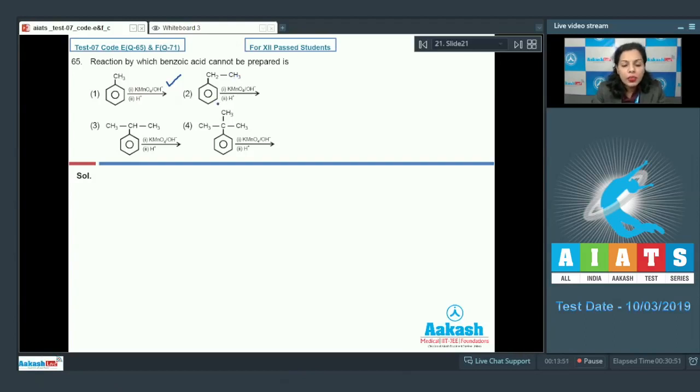Further we have ethyl benzene. Ethyl benzene also doing so. In the presence of alkaline KMnO4 followed by H plus ion, it is also giving you the benzoic acid. This is another preparation of benzoic acid.